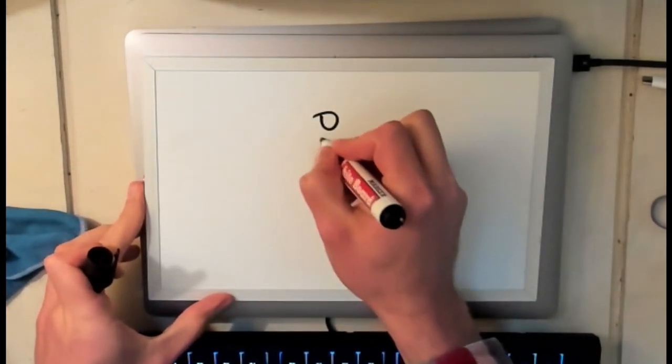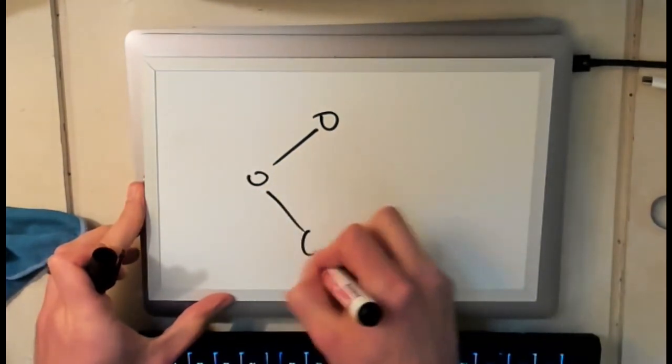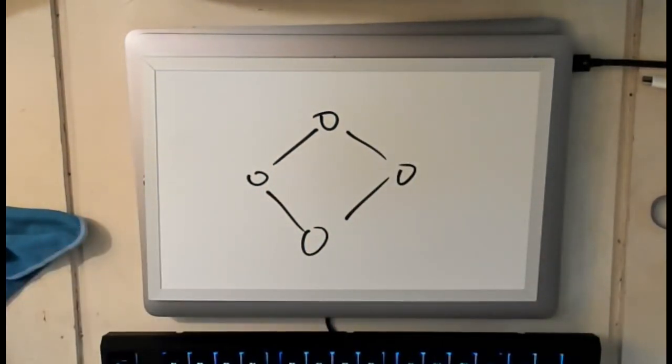So what is a graph? The easiest way to get started with this is just to draw one and then we'll talk about it. Alright, so there's an example of a graph.